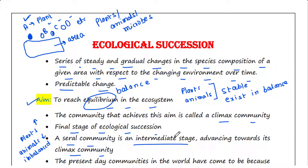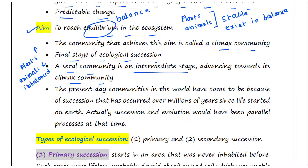The present-day communities in the world have come to be because of succession that has occurred over millions of years since life started on Earth. Actually, succession and evolution would have been parallel processes at that time.